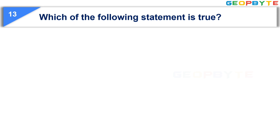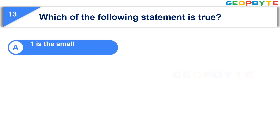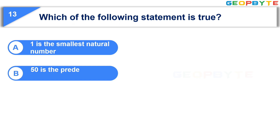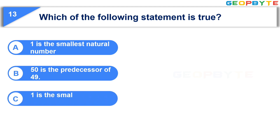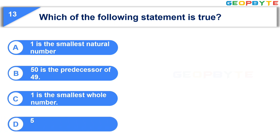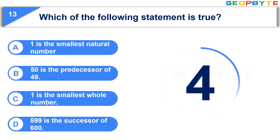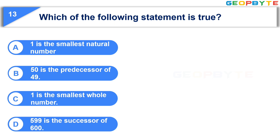The thirteenth question is: Which of the following statement is true? Option A: 1 is the smallest natural number. Option B: 50 is the predecessor of 49. Option C: 1 is the smallest whole number. Option D: 599 is the successor of 600. Your time starts now. Your time is up and the correct answer is Option A, 1 is the smallest natural number.